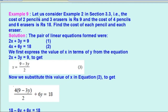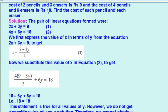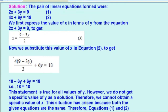अब देखते हैं example 9. Example 9 क्या बोल रहा है? Let us consider example 2 in section 3.2: the cost of 2 pencils and 3 erasers is 9 रूपए, and cost of 4 pencils and 6 erasers is 18 रूपए. Find the cost of each pencil and each eraser. तो वहाँ पर linear equations हैं: 2x plus 3y equals to 9 and 4x plus 6y equals to 18. हम first इनको x की terms में करते हैं. तो x equals to (9 minus 3y) upon 2.